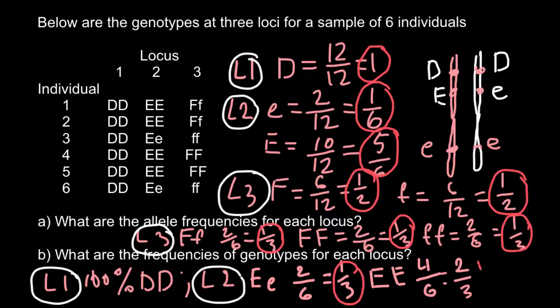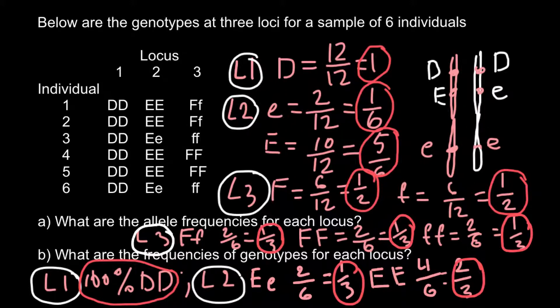So to summarize: in Question A we found allele frequencies. In a diploid organism we can have two variants of alleles at the same locus, though there can be more than two possible alleles in a population — for example, alleles D1, D2, D3, D4, and so on. But no more than two alleles can be present at the same locus in a single diploid organism. In Question B, we found genotype frequencies. With two alleles we can have three different genotypes, each present at different frequencies.